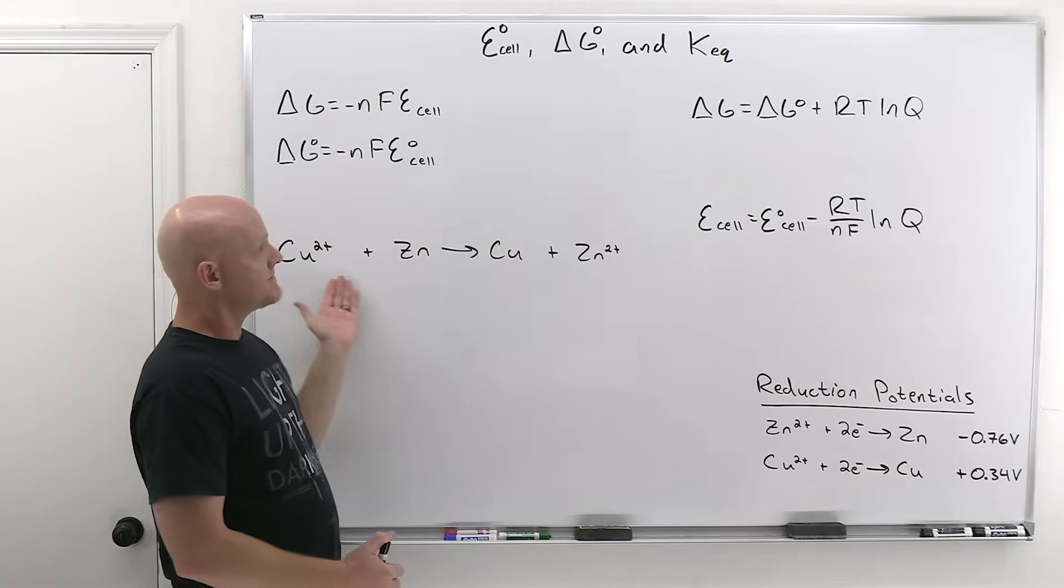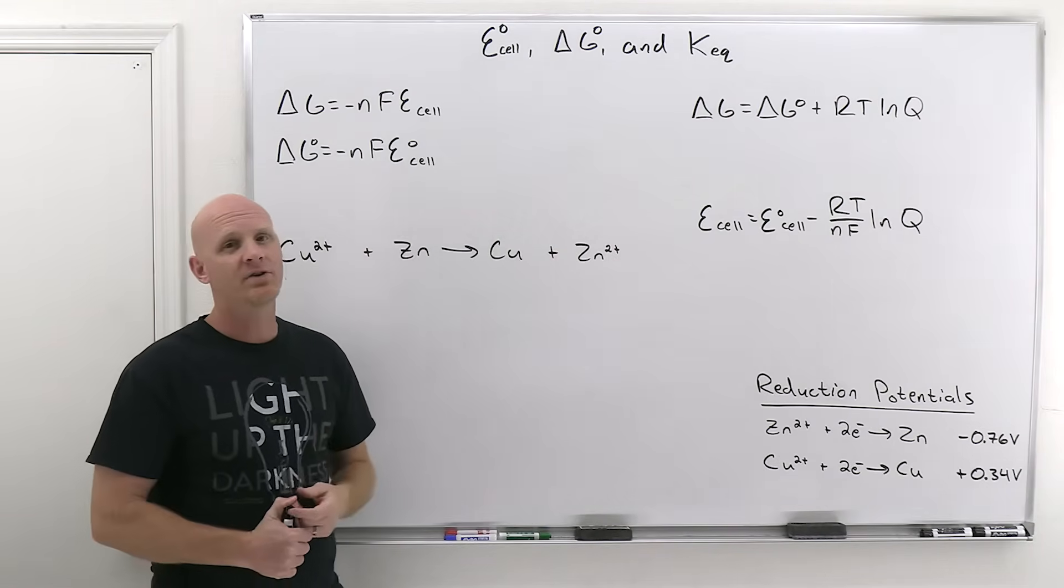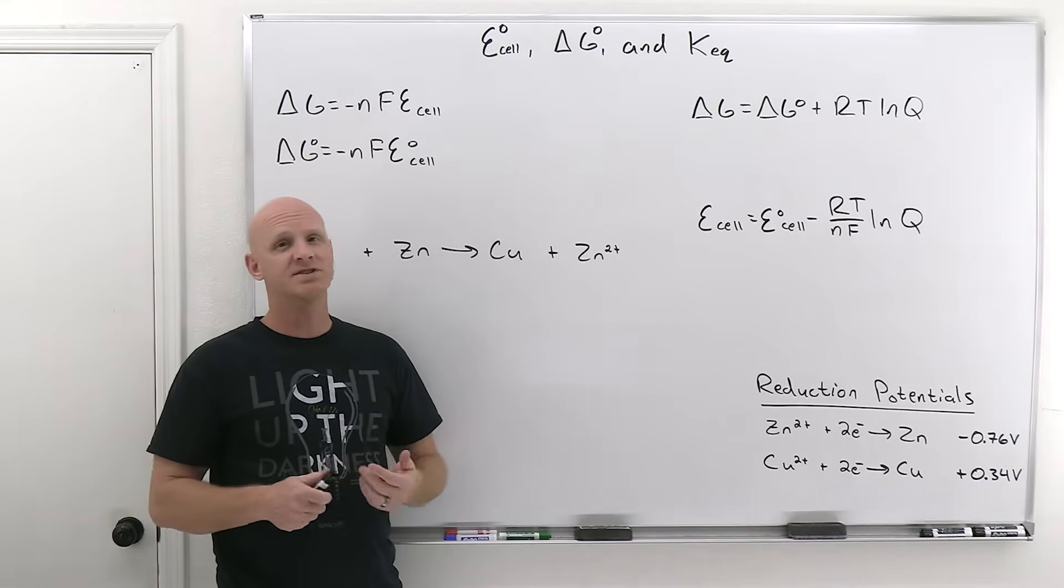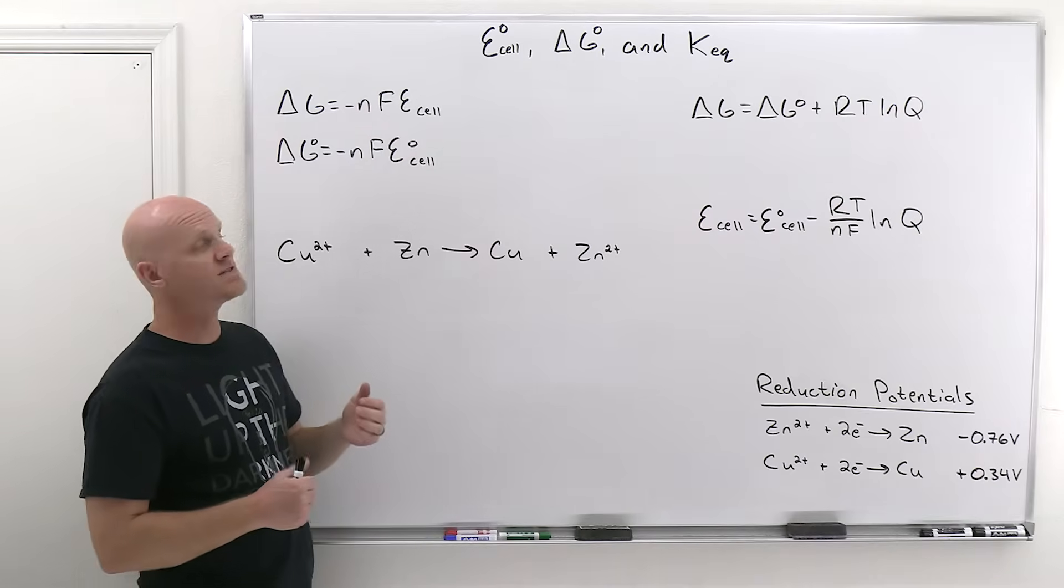So we're going to take a look at this lovely reaction, and we're first going to calculate the standard value for the cell potential E cell, and then we're going to use that to calculate delta G and K_eq. Now we hinted towards this in the last lesson, but the relationship between delta G and E cell